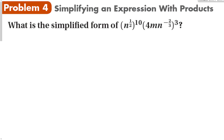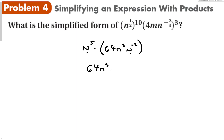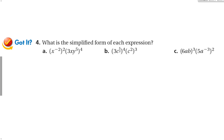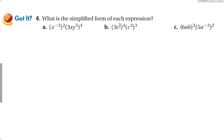Simplifying an expression with products — let's take it slow. We have one term raised to the 10th and another raised to the 3rd power. Exponents come before multiplication, so n to the 1-half times 10 gives n to the 5th. Then raise everything to the 3rd power: 4 to the 3rd is 64, m to the 3rd, and n to the negative 2-thirds times 3 becomes n to the negative 2. Combining the n terms by addition gives 64 m to the 3rd n to the 3rd.